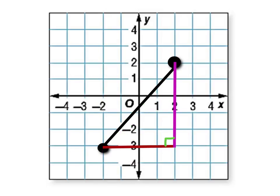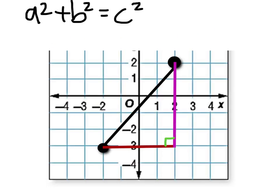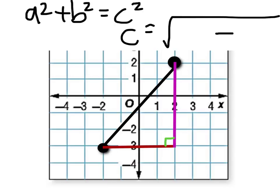So we've got this right triangle, and it's going to be very important to remember the Pythagorean theorem. Even more importantly, we need to find the length of the hypotenuse. The hypotenuse is C, and to find it we take the square root of the sum of the squares of the other two sides — we add them. This right triangle is directly related to the Pythagorean theorem.